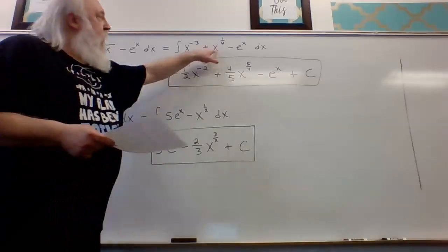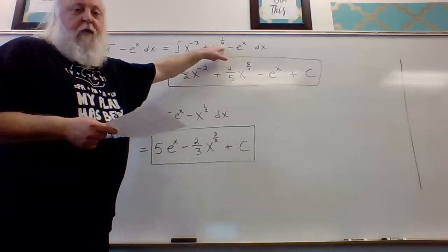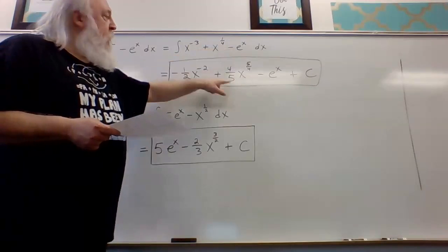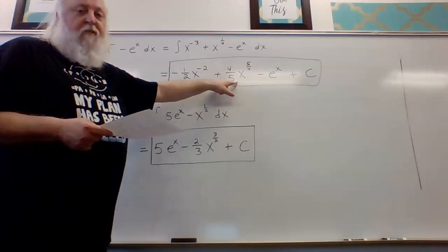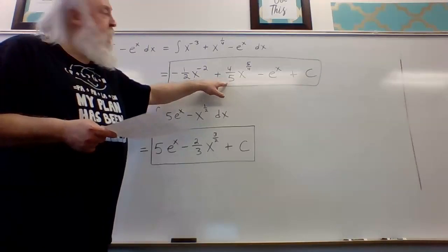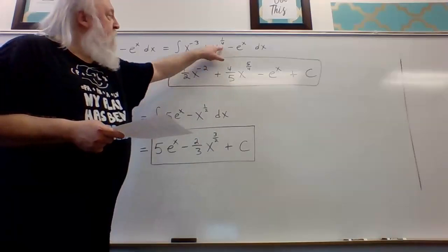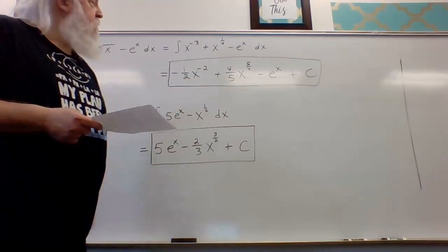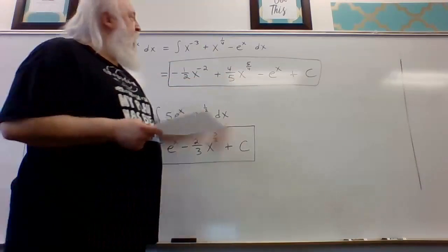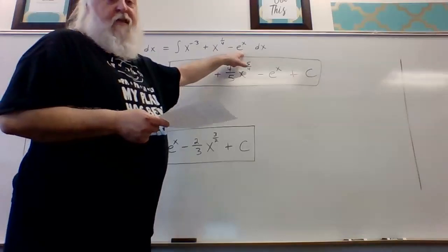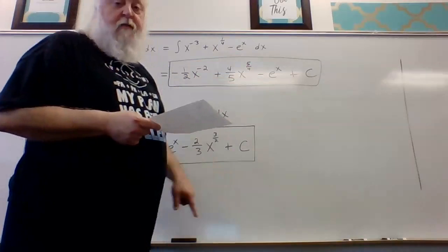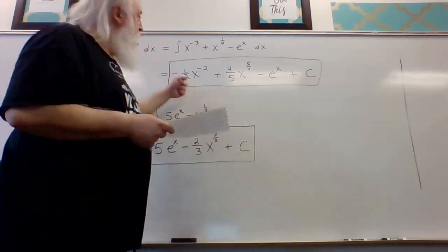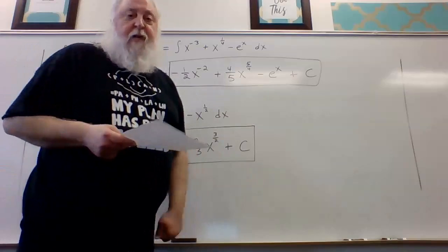For x to the one-fourth, we add one to get five-fourths, and dividing by five-fourths is the same as multiplying by four-fifths, giving four-fifths times x to the five-fourths. Then we subtract the antiderivative of e to the x, which is e to the x, and add the arbitrary constant c when we're done antidifferentiating.